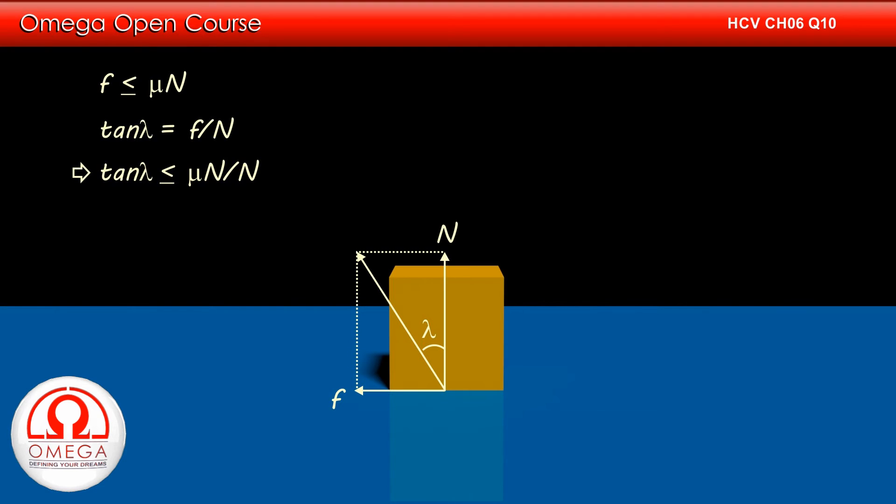Which implies tan lambda is less than or equal to mu N divided by N, or tan lambda is less than or equal to mu. This implies lambda is less than or equal to tan inverse mu.